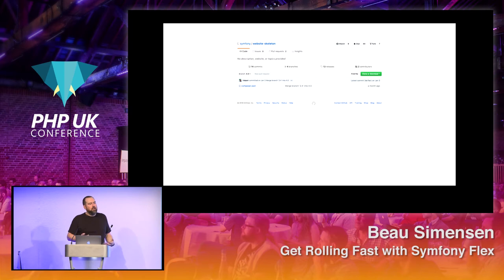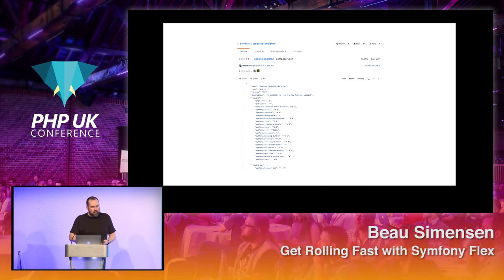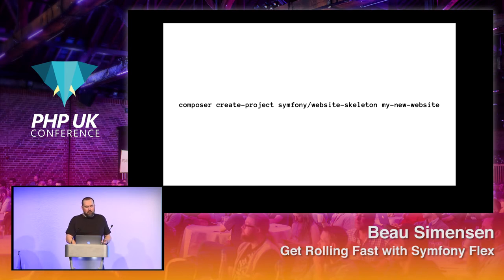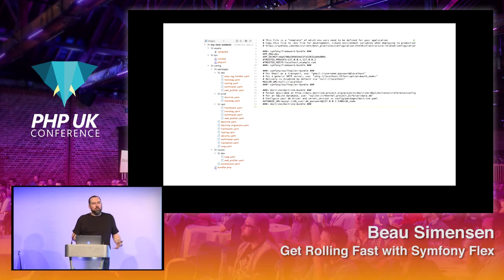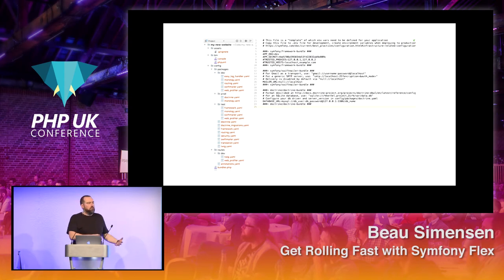If you want to build another kitchen-sink-style skeleton, you can totally do that — this is the website skeleton. Again, it's just a composer.json file, but it has a bunch of new dependencies: security bundle, serializer, SwiftMailer, Webpack Encore, and more. The project you end up with has a lot more files in it — SwiftMailer YAML, WebProfiler, Monolog, some Doctrine things — all created by Symphony Flex because these additional bundles have been installed. And it's not just at creation time; if you add or remove bundles after the fact, these configuration files will just start showing up and going away.